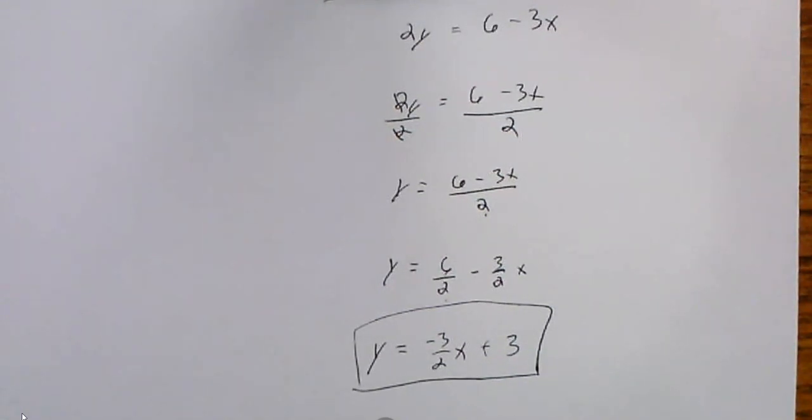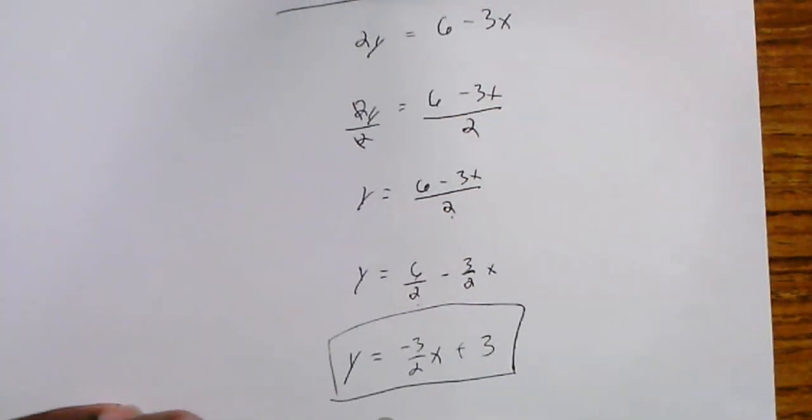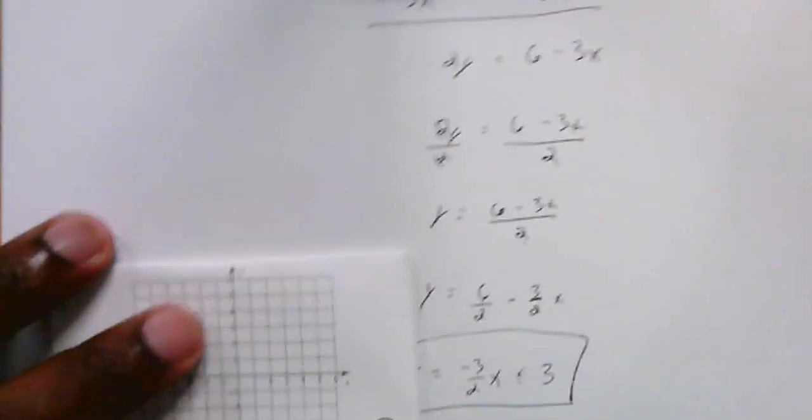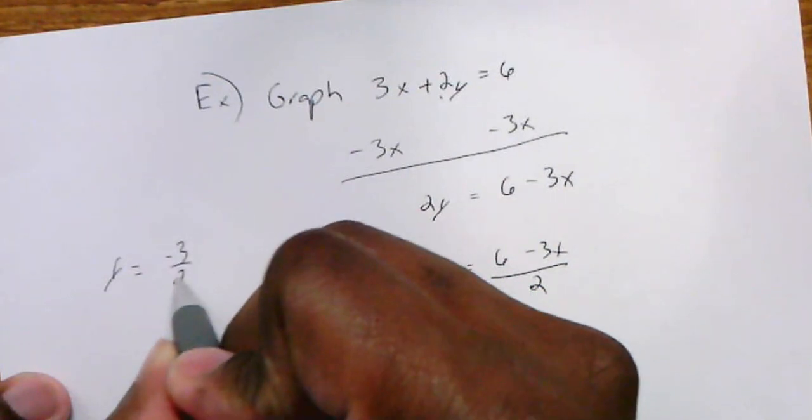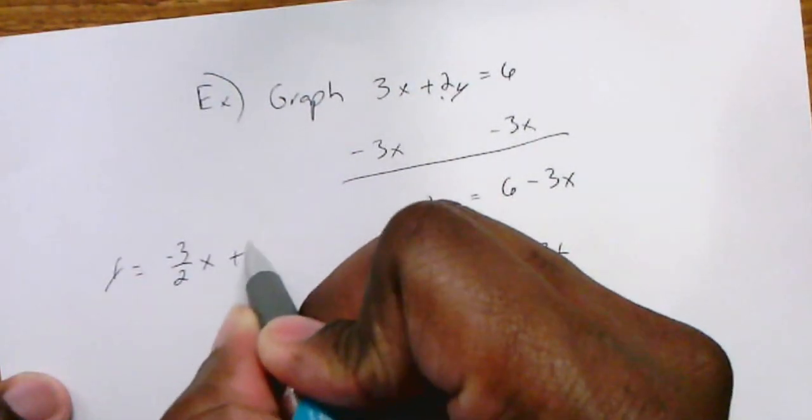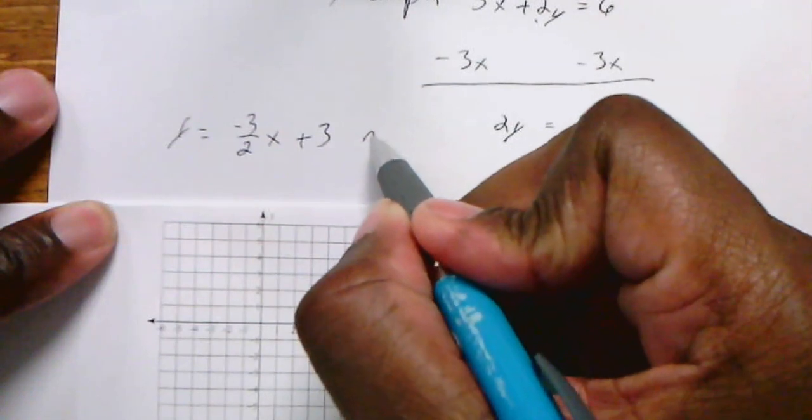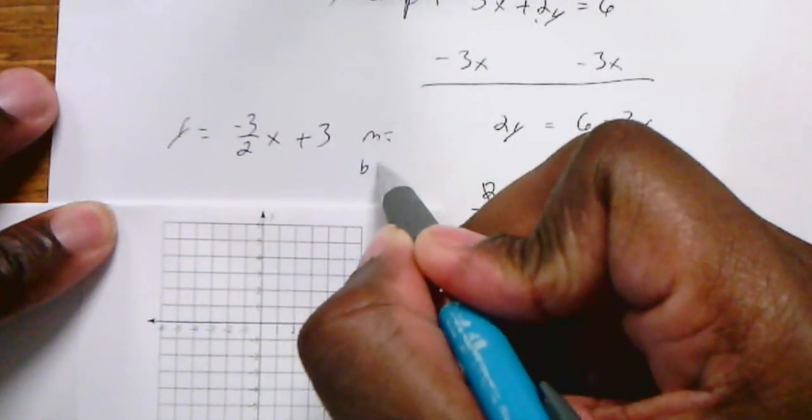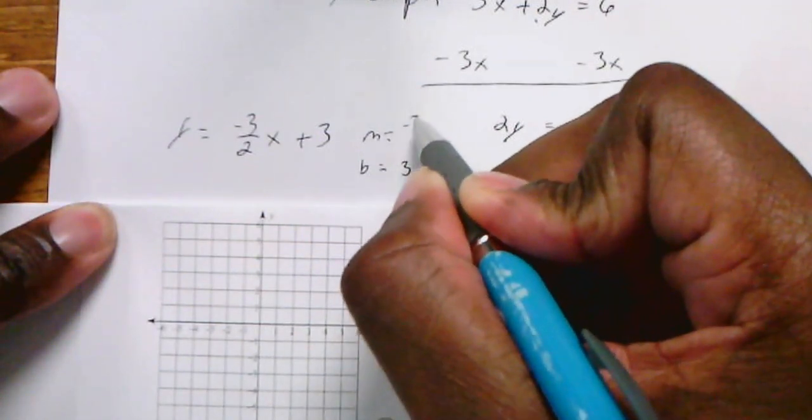If I wanted to graph that equation, I would simply take a graph and plot it. The equation was y equals negative 3 over 2x plus 3. By graphing the equation, I know my y-intercept and my slope.